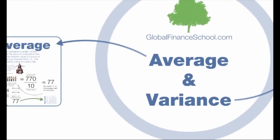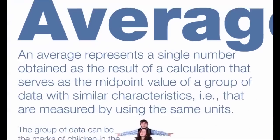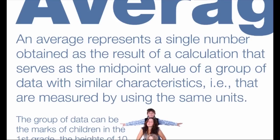Average Invariance. An average represents a single number obtained as the result of a calculation that serves as the midpoint value of a group of data with similar characteristics, that are measured by using the same units.